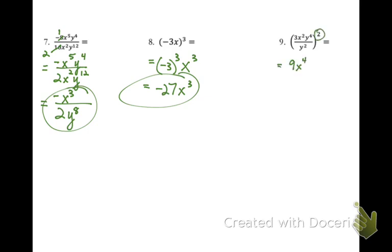So 3 to the 2nd power is 9. x squared raised to the 2nd power, you're going to multiply those exponents, is x to the 4th. y to the 4th raised to the 2nd power is y to the 8th. And finally, y squared raised to the 2nd power is y to the 4th.